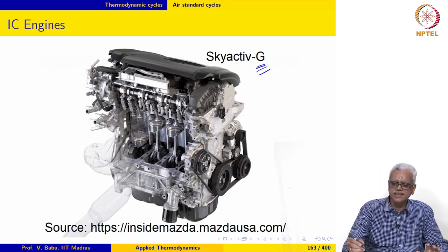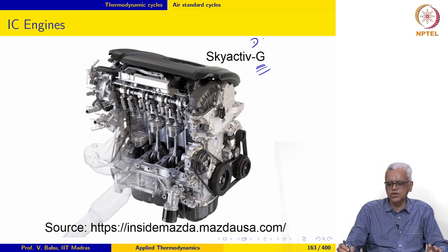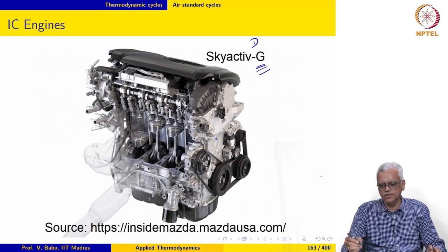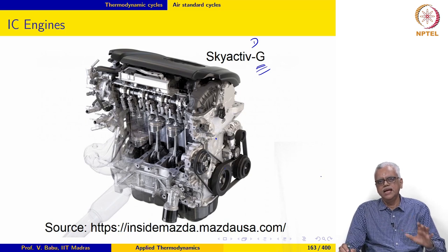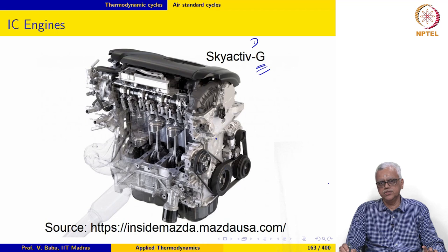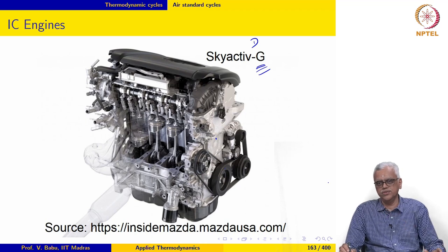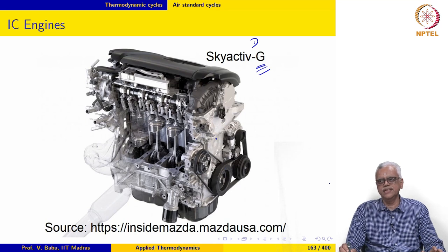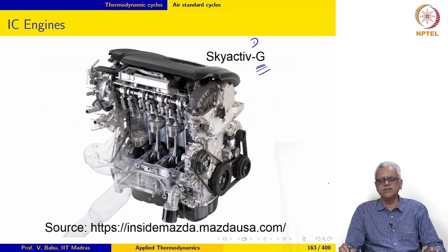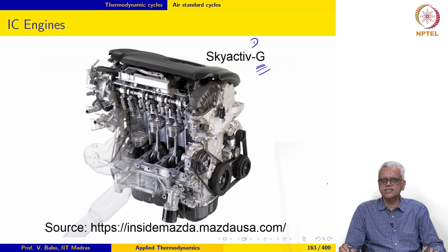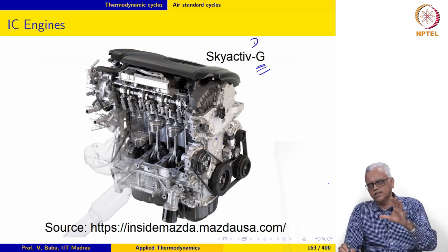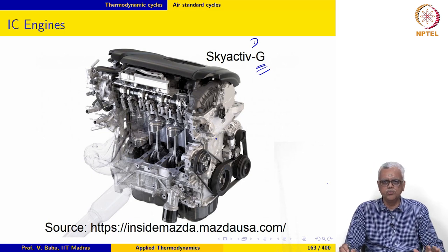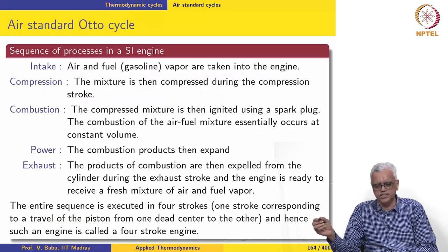Now, Skyactiv-D is a diesel engine version of this Skyactiv engine and it also uses advanced technologies. It uses a lower compression ratio. In fact, startlingly, it uses a compression ratio of 14 again, but it has much higher fuel efficiency, much less emissions and so on. There is still a lot of scope for improving efficiency and emissions of internal combustion engines.